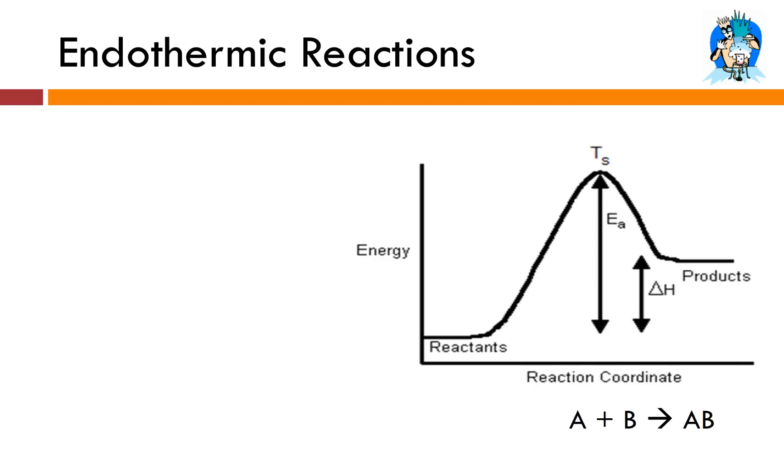Endothermic reactions are 180 degrees the opposite. Endo, that prefix, means in. Therm, again, is talking about heat. So these are going to be chemical or physical changes where heat is being absorbed.